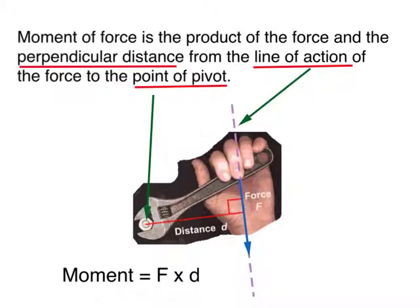Just a quick recap: moment of force is the product of force and the perpendicular distance from the line of action of the force to the point of pivot. Which means if you have a bigger perpendicular distance, you will have a bigger moment and hence a bigger turning effect.